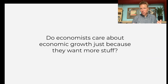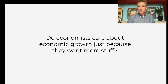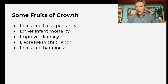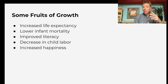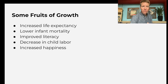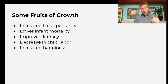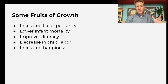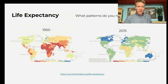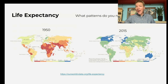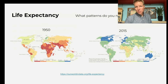So who cares? It's just a bunch of stuff. Why should we care about economic growth? Well, it turns out that economic growth is correlated with a lot of other things we might actually really care about: life expectancy, infant mortality, literacy, decreased child labor, increased happiness. In the next couple slides we show the data for all this. As the world has gotten richer, increased life expectancy means people are living much, much longer. Back in the day, about half your children would die. Now infant mortality has gone to record low levels. This is the fruit of growth.